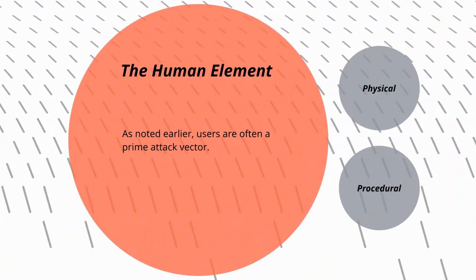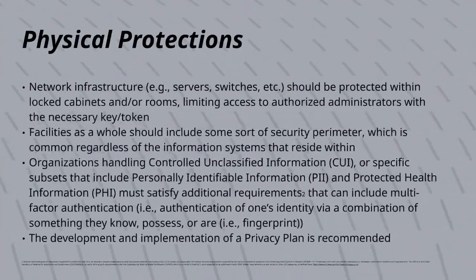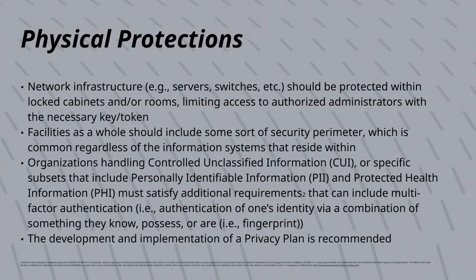As we noted earlier, users are often a prime target for an attacker. We will now address categories of physical and procedural vulnerabilities. Physical protections are fairly straightforward and generally involve common-sense best practices. Network infrastructure should be protected within locked cabinets or rooms, limiting access to authorized administrators. Facilities should normally include some sort of security perimeter.